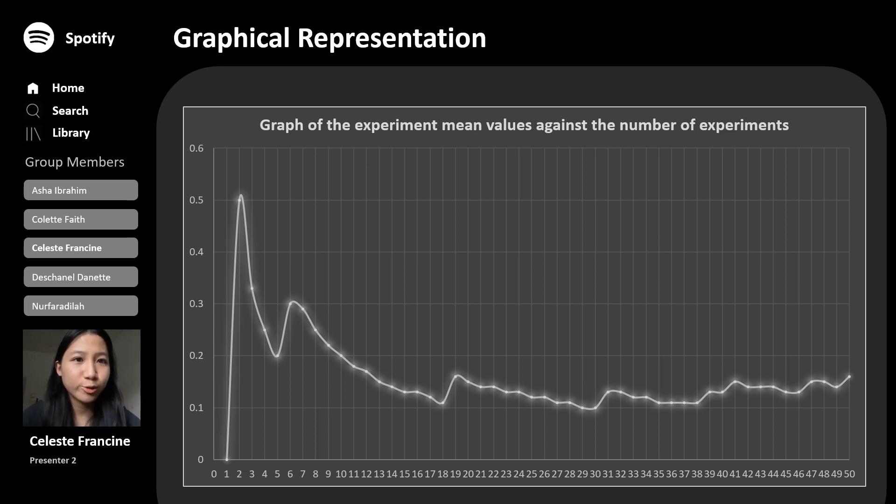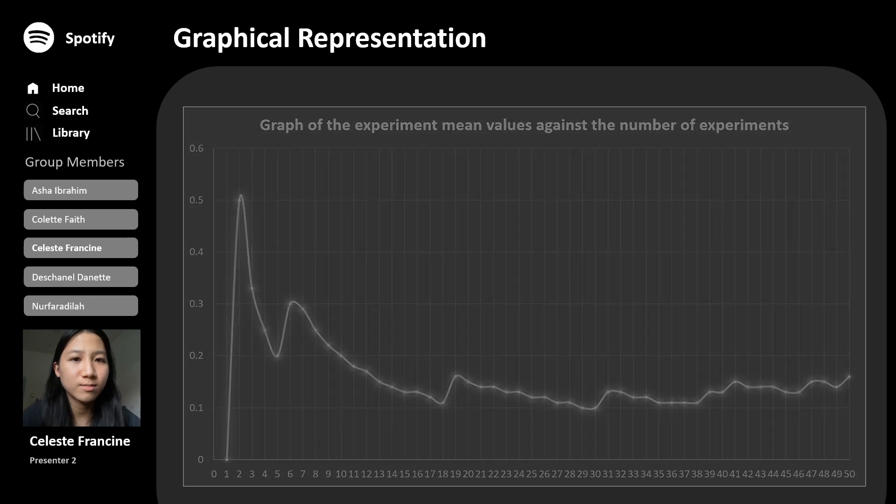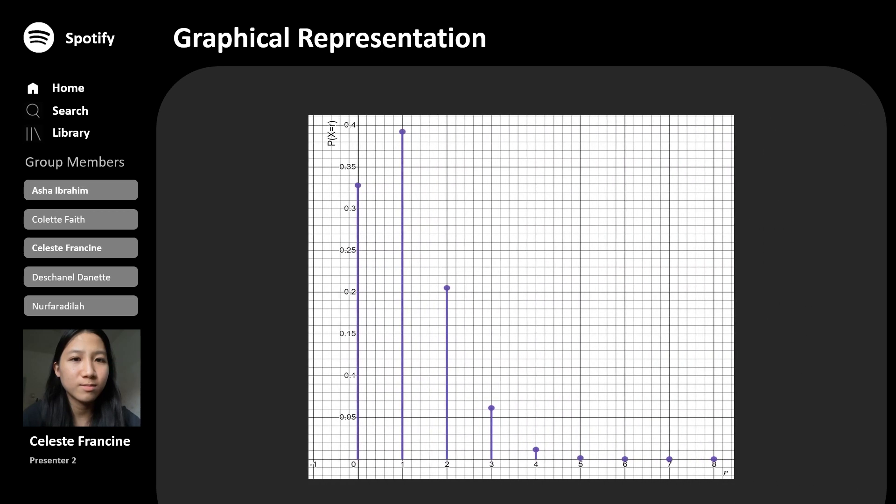There are two graphs in this DRV project. The first graph shows the experimental mean values against the number of trials. For the second graph, which is the binomial distribution graph, we put in the value of p, 0.13, and the number of trials, 8, into the Desmos graphing calculator.